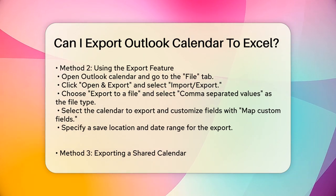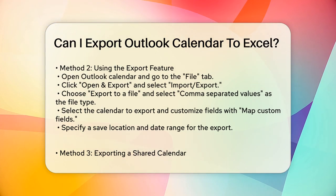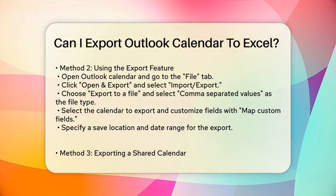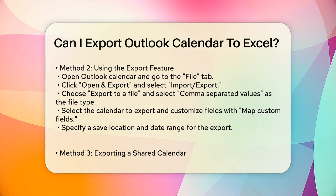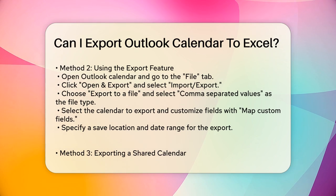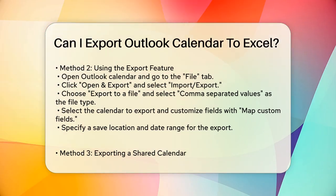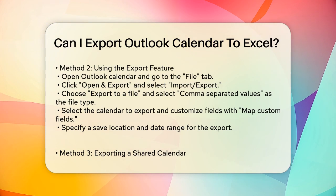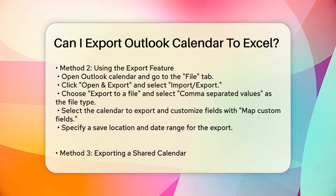Method 2: Using the Export Feature. Another method involves using Outlook's built-in export feature. Start by opening your Outlook calendar and going to the File tab. Click Open and Export, and then select Import/Export. This will open the Import and Export wizard. Choose Export to a file and click Next. Select comma-separated values as the file type and click Next again.